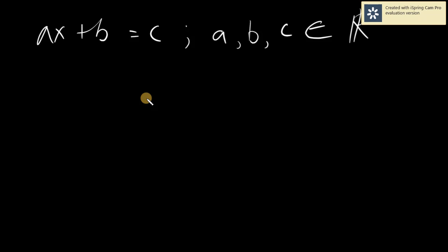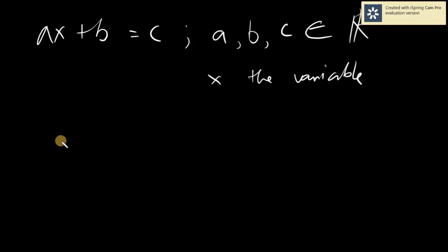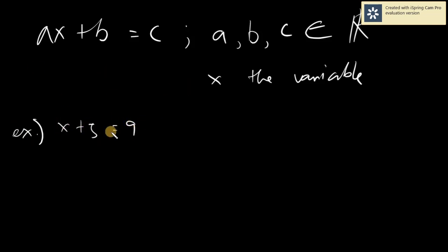And of course our X is simply your variable. Any given linear equation can always be expressed in this form. For example, X plus 5 equals 9. This is already in the form AX plus B equals C, where A equals 1 — remember, if there is no number beside X, it's automatically 1.